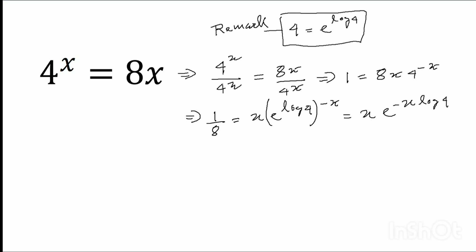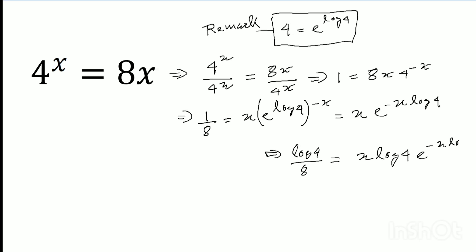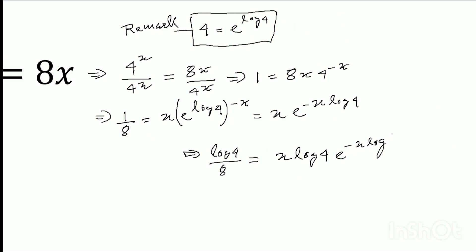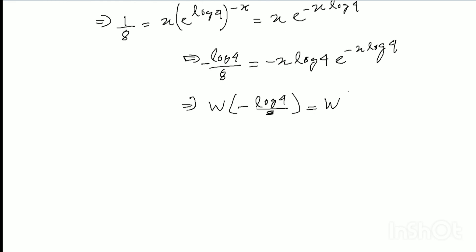Now multiplying both sides by log 4: log 4 divided by 8 equals x times log 4 times e to the power (minus x log 4). Multiplying both sides by minus 1, we get: minus log 4 divided by 8 equals minus x log 4 times e to the power (minus x log 4). Now we apply the Lambert W function.